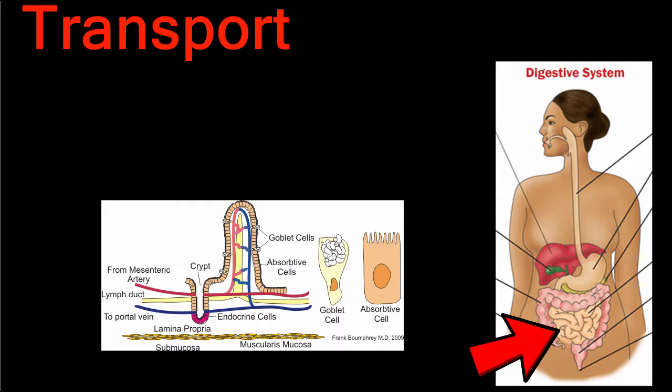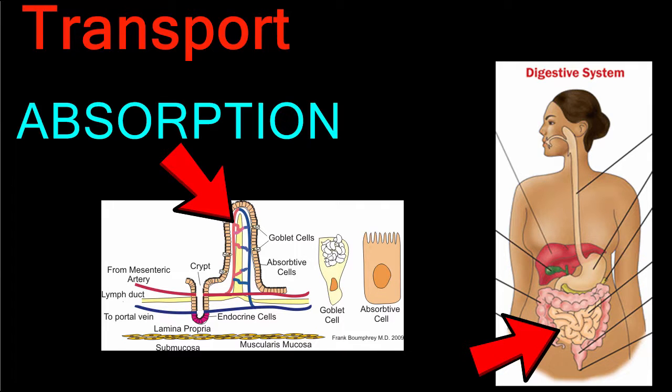In the last lesson, you learned that nutrients are absorbed primarily in the small intestine, where microscopic villi allow the nutrients to enter the bloodstream by diffusion. This process of absorption is the first step in the life activity of transport.